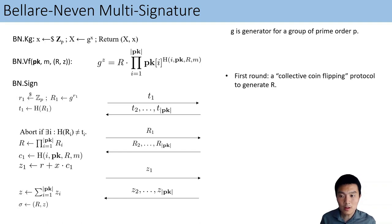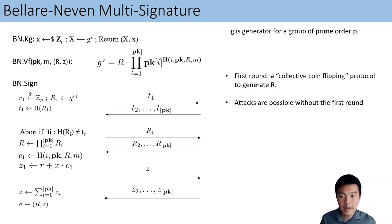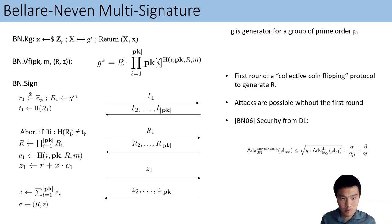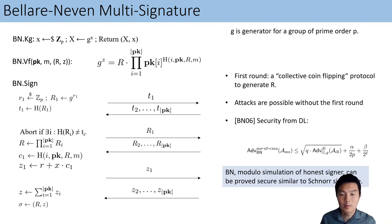The first two rounds can be seen as a collective coin-flipping protocol that generates a random group element R. Attacks are possible if the first round is omitted. For security, BN shows the following reduction from DL. We want to prove tighter results, and by observing that the security of BN is closely related to the security of Schnorr, we will use the identification logarithm problem, first coined by Kiltz, Masny, and Pan.